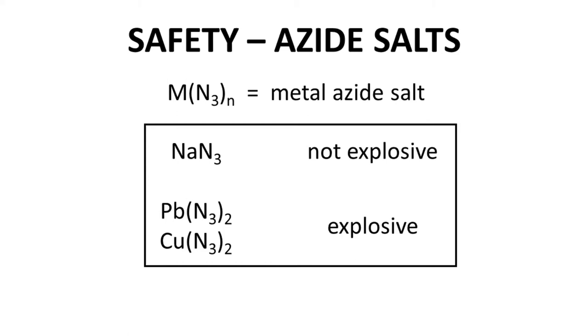While sodium azide is relatively safe under most laboratory conditions, other salts like lead azide and copper azide are both very explosive and very unstable. Lead and copper azide are sometimes formed when sodium azide solutions are not disposed properly. If sodium azide waste is regularly dumped down a drain that contains copper or lead pipes, lead or copper azide can build up over time and eventually lead to an explosion.